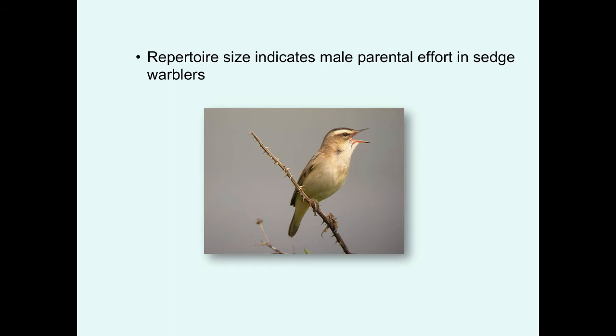Song repertoire size is important in some birds. In sedge warblers, larger repertoires are good indicators of males that will provide very good parental care. Males with small repertoires tend to not make very good parents. What all of these characteristics have in common is they're costly to produce and maintain. You can't have bright plumage if you don't have good foraging. You can't do energetic displays if you're not going to be able to effectively fan a nest. And large repertoire size takes a lot of time to develop — individuals tend to be older and have learned more songs, so you wouldn't be able to pull that off if you were not a high-quality individual.